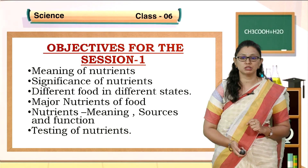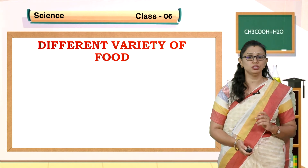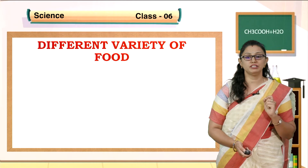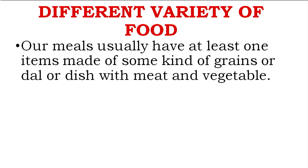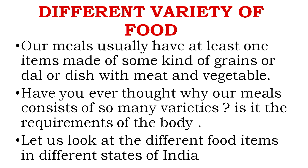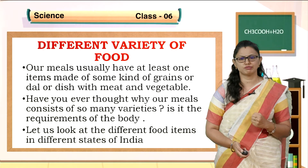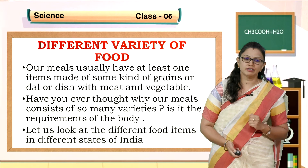As already in the previous class, I told you to collect information about different food items in different states of India. As you know, our meals usually have at least one item made up of some kind of grain or dal or dish with meat-like vegetables. Have you ever thought why our meals consist of so many varieties? Let us look at the different food items in the different states of India.